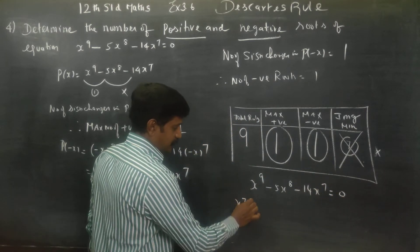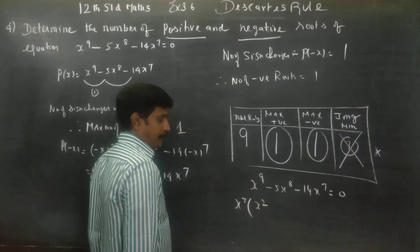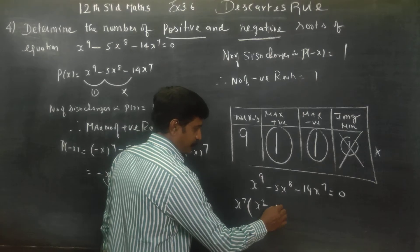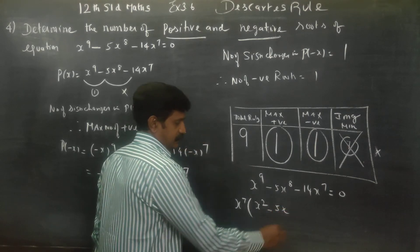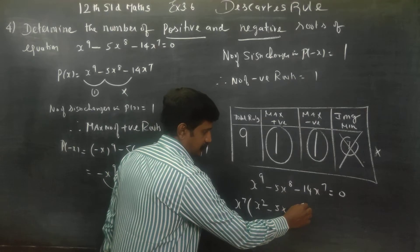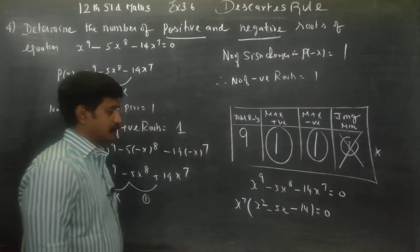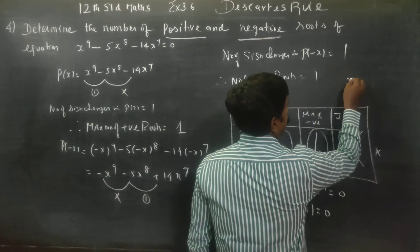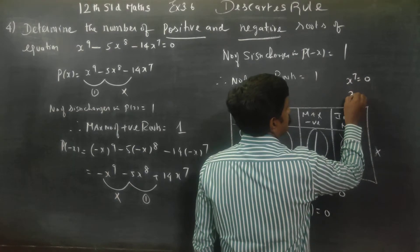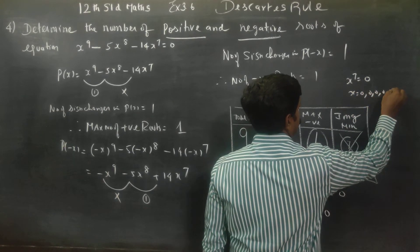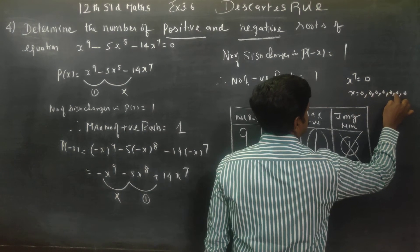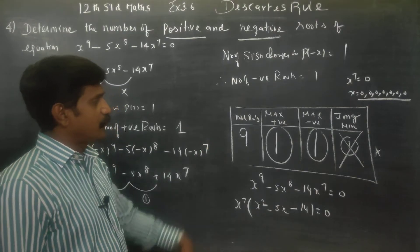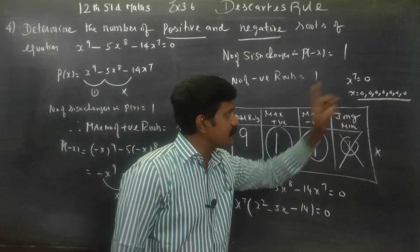Common factor x power 7 can be taken out. The balance is x squared minus 5x minus 14 equals 0. So x power 7 equals 0, which means x equals 0 repeated 7 times — that gives 7 zeros. There are 7 zeros from this factor.